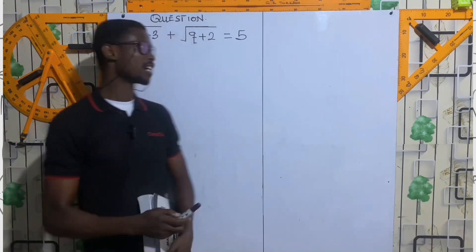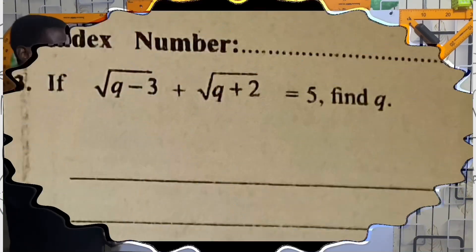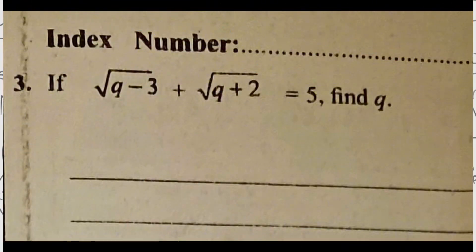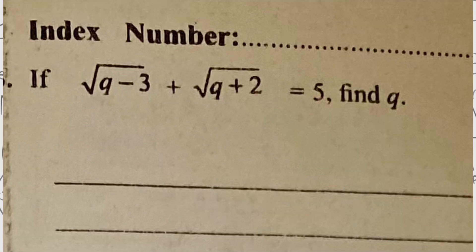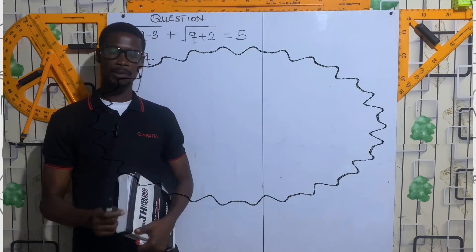I hope you have come across this radical question. During WAC Elective Math 2023, question number 3: If the root of Q minus 3 plus the root of Q plus 2 equals 5, find Q.